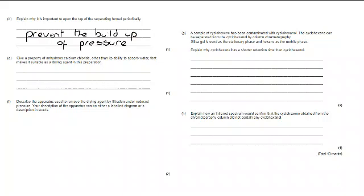Give a property of anhydrous calcium chloride other than its ability to absorb water that makes it suitable as a drying agent in this preparation. So what we're looking for here is that it would not dissolve in the cyclohexene.